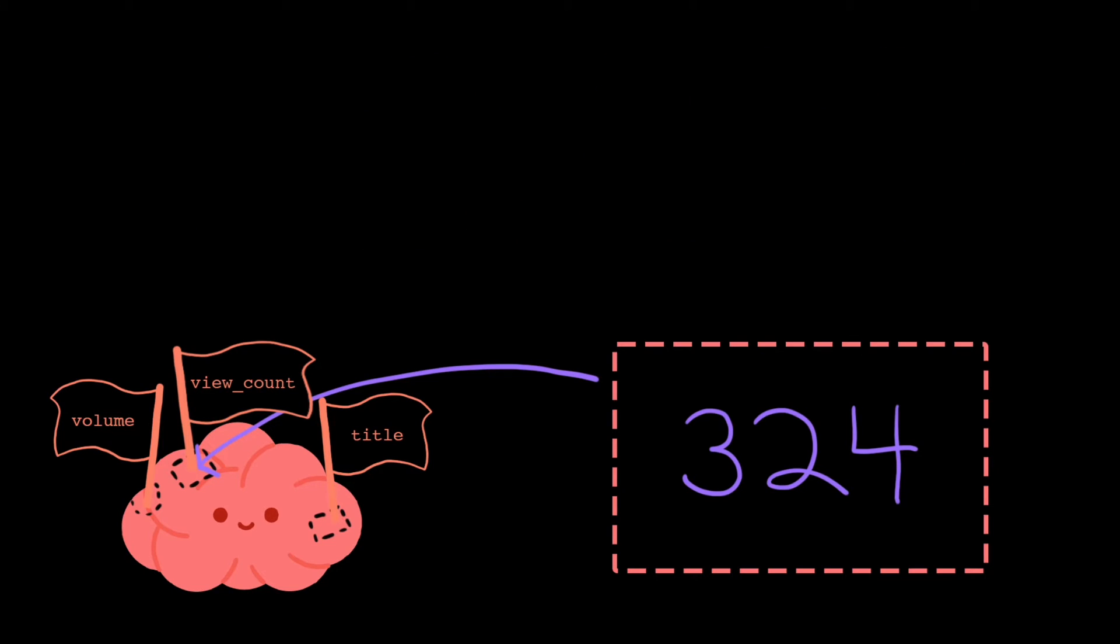Anytime we want to access the value stored at a location, we can ask the computer to retrieve it by giving it the name. For example, if I had the instruction print view_count, the computer would go find the memory location view_count, grab the value stored there, and substitute it in. So, this would print 324.